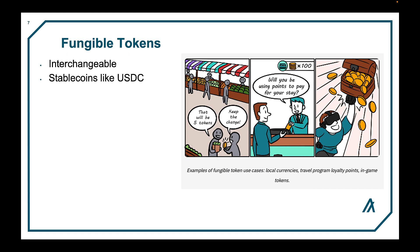For example, stable coins like USDC are fungible tokens as they each have the same value. A stable coin is a cryptocurrency that is pegged to a stable asset, such as the US dollar, in order to reduce the volatility of the price. Stable coins are designed to maintain a stable value over time, making them attractive for use in payments and investments. Other examples of fungible tokens include in-game points, loyalty points, and system credits.